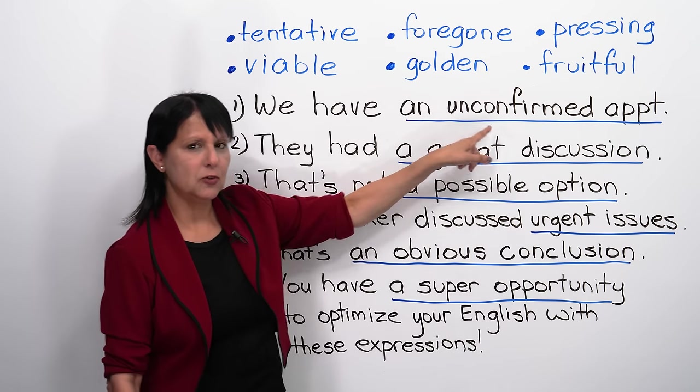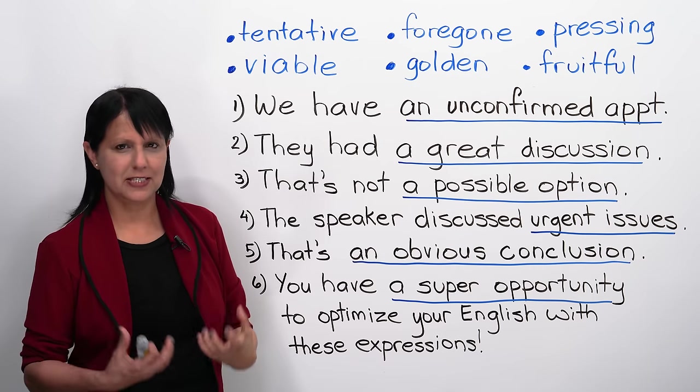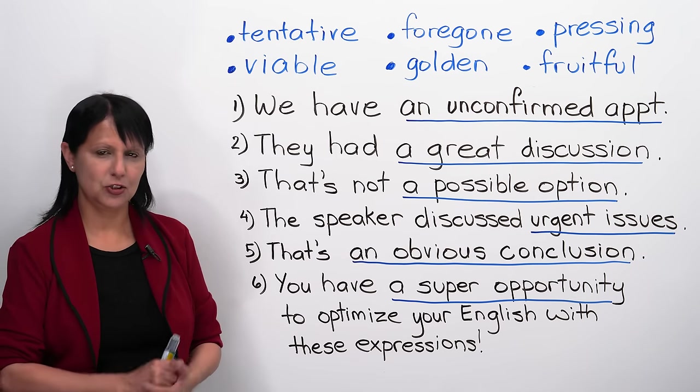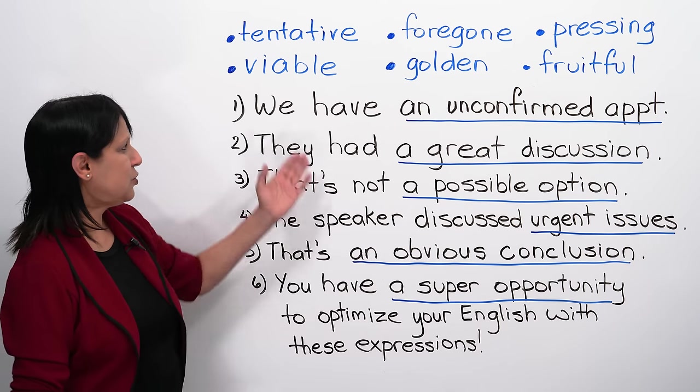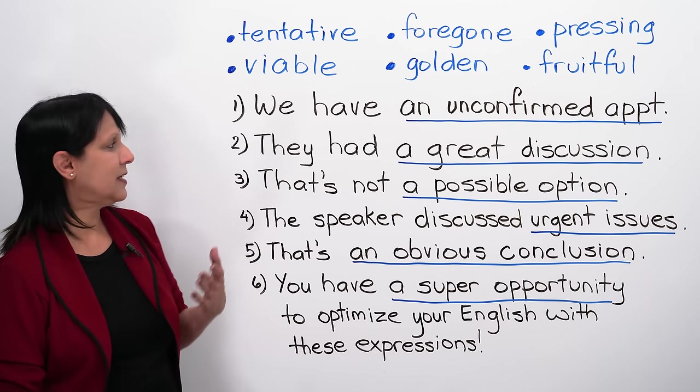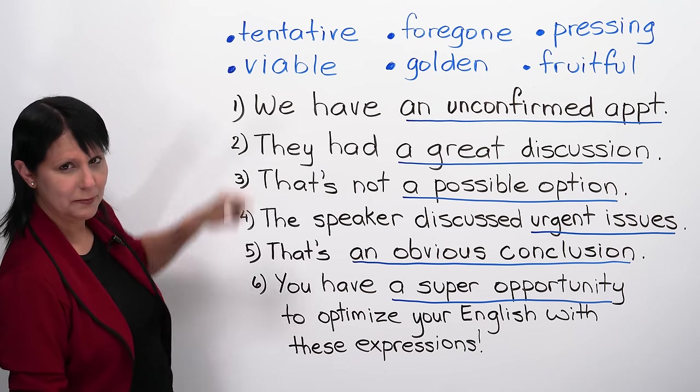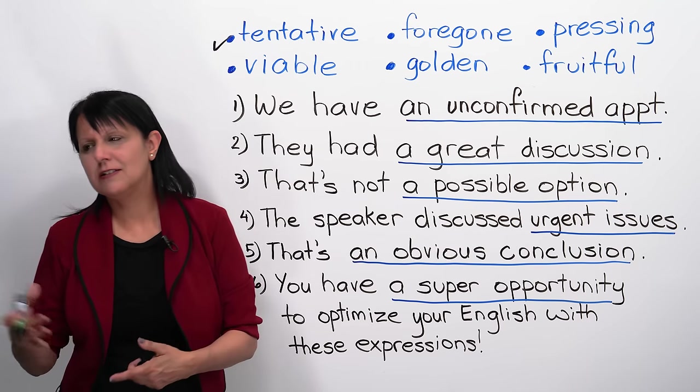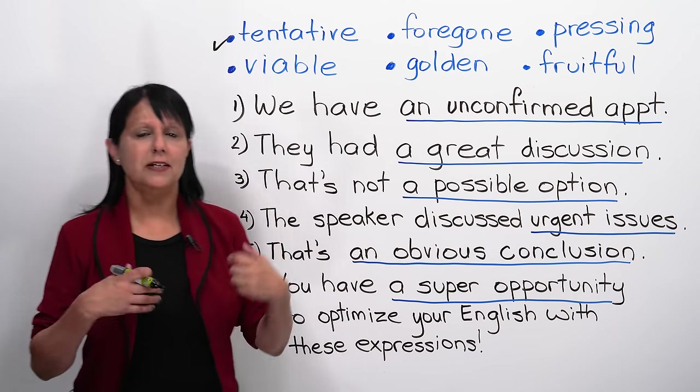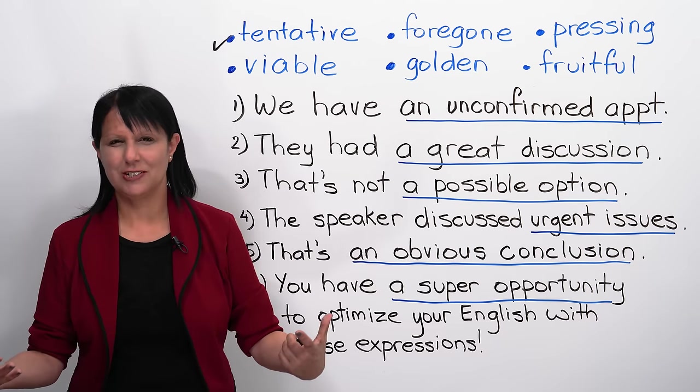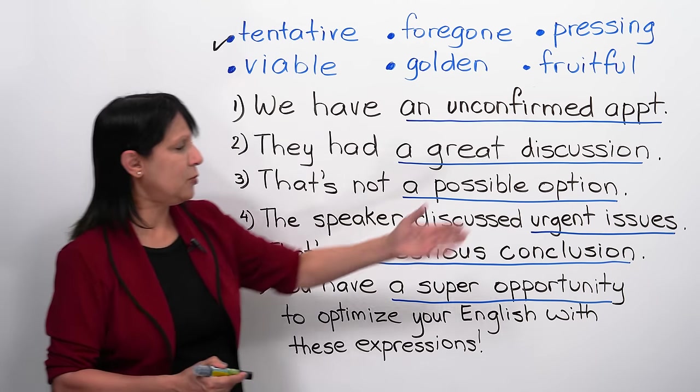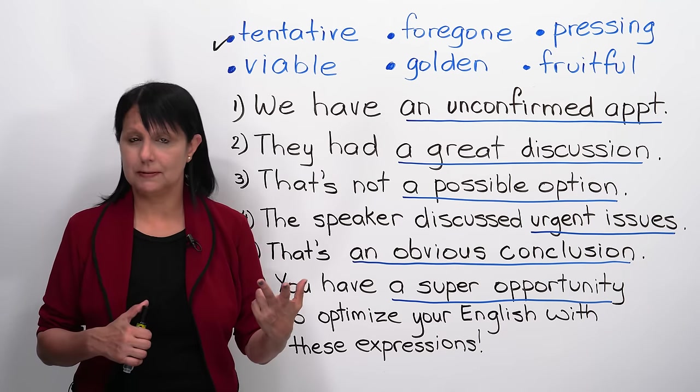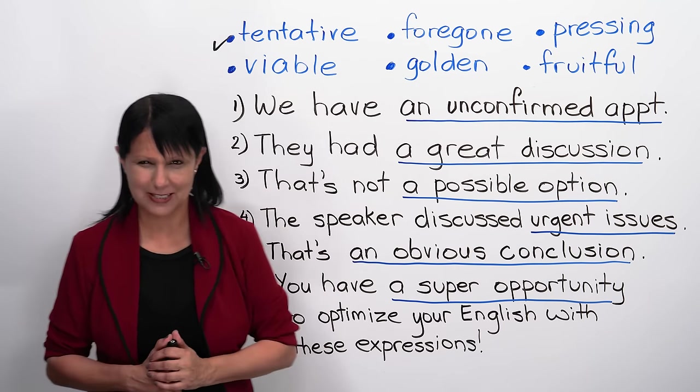So, let's replace this word with one of the words that we learned, which means the same thing. What is that? If you need more time to think, you can pause the video, think, and then continue. Or just stay with me. So, the expression should be, we have a tentative appointment. Good. We have a tentative appointment. We don't usually say we have an unconfirmed appointment. You can say that. These aren't wrong, but this is like a professional expression. We have a tentative appointment. And by the way, it's not only for appointments. You could have a tentative plan. You could have a tentative meeting. So, we use this expression in various ways.